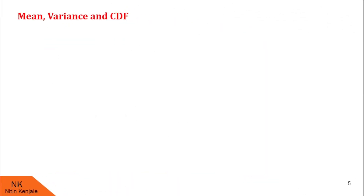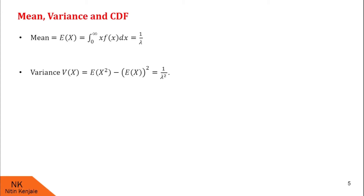Now let us see how to calculate the mean, variance, and cumulative distribution function of an exponential distribution variate. The mean of x is the expectation of x, given by the integral of x × f(x) dx over the limit 0 to infinity for any continuous random variable. It is found that E(x) = 1/lambda. Similarly, variance of x, denoted V(x), has the formula E(x²) − [E(x)]², and it is found that V(x) = 1/lambda².